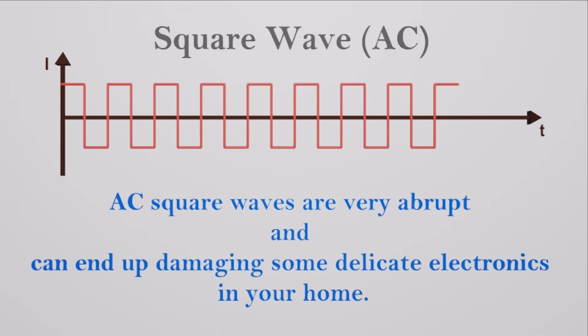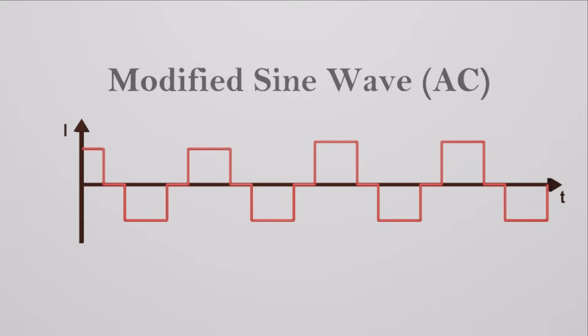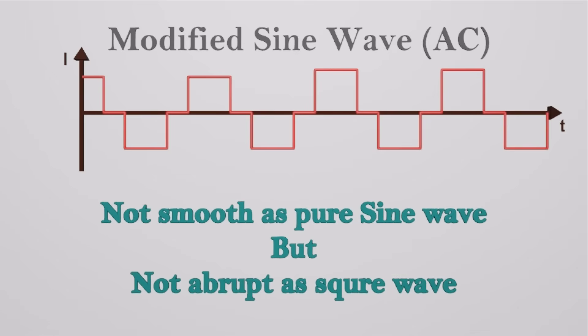AC square waves are very abrupt and can end up damaging some delicate electronics in your home. To solve this, manufacturers invented rectification devices that modify the wave, creating what is known as a modified sine wave. As the name suggests, modified sine wave is not really a true sine wave at all. It is simply a stepped wave, like this.